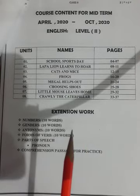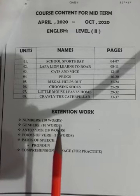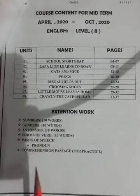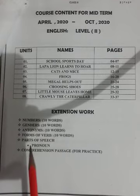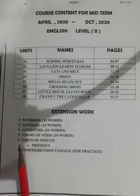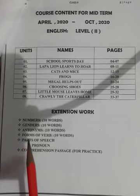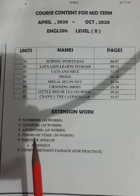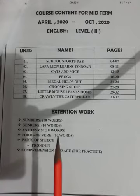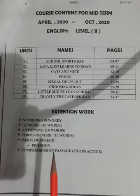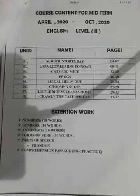Extension word is also part of course contents. We will cover these topics: Numbers — singular and plural, 10 words. Genders — masculine and feminine, 10 words. Antonyms — words opposites, 10 words. Forms of verbs, 10 words. Parts of speech — only pronoun. And comprehension passage. Now we will start Unit 1.